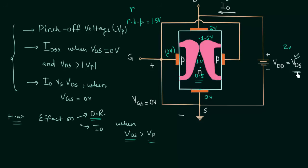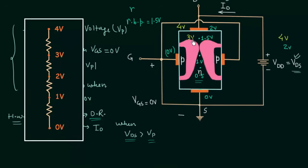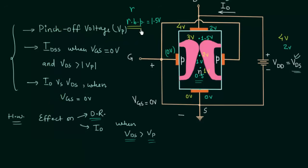Now I will increase VDS. The new VDS is equal to 4V. With 4 equal resistances in the N channel, the potential distributes as: 4V at the drain, 3V at the next point, 2V, then 1V, and 0V at the source. The reverse biasing potential at the top PN junction is now equal to 3V, so the PN junction is more reverse biased than in the earlier case.